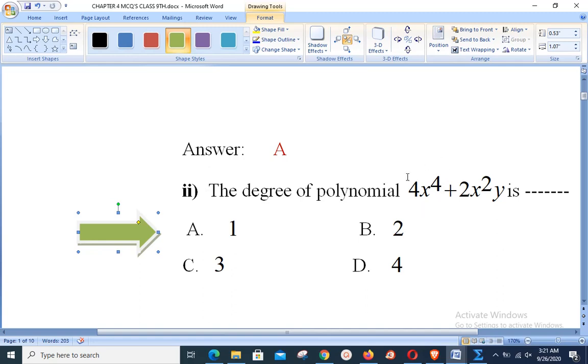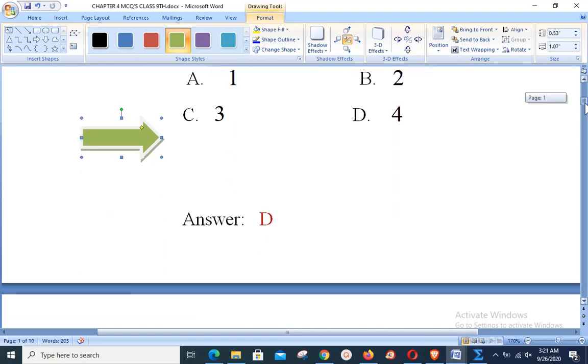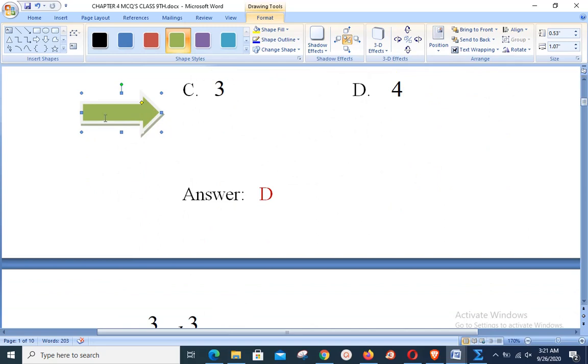You can see in term number 1, that is in 4x to the power 4, x has exponent 4. Whereas in the second term 2x to the power 2 y, there are two variables x and y being multiplied. x has exponent 2, y has exponent 1. So you will add them: 2 plus 1 equals 3, whereas in the first one it is 4. As the maximum is called degree, so option D is correct. That is, degree of this polynomial given is 4. Hope you all understand that.